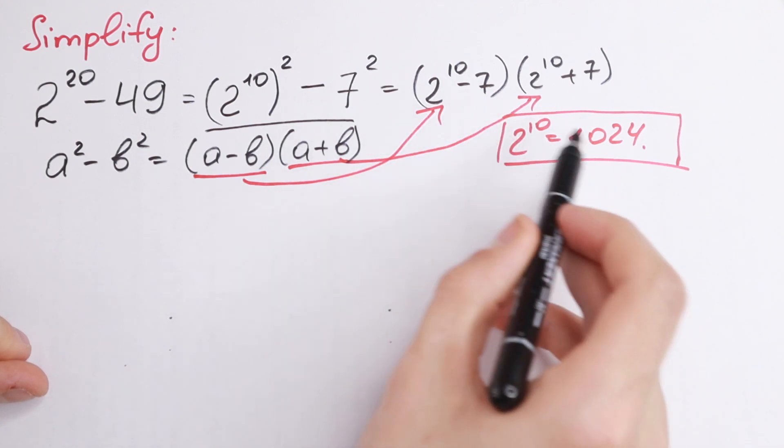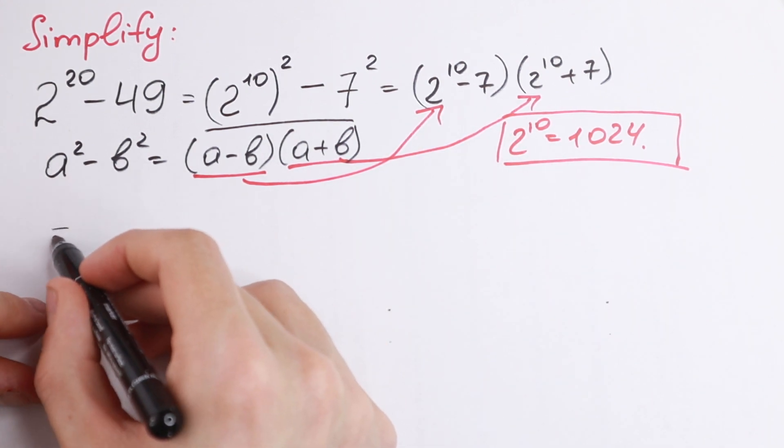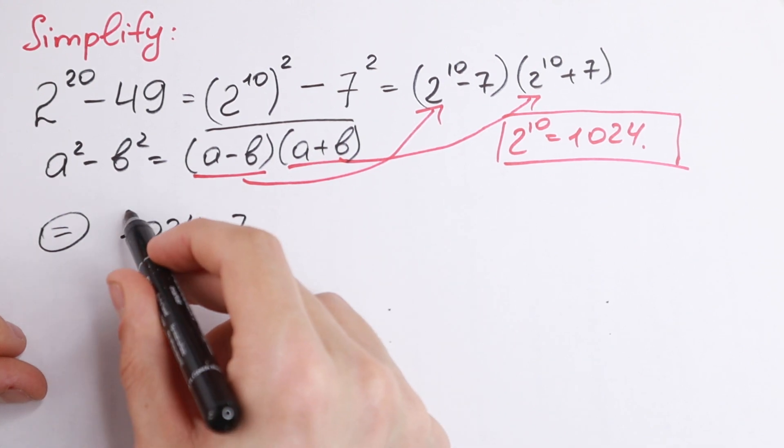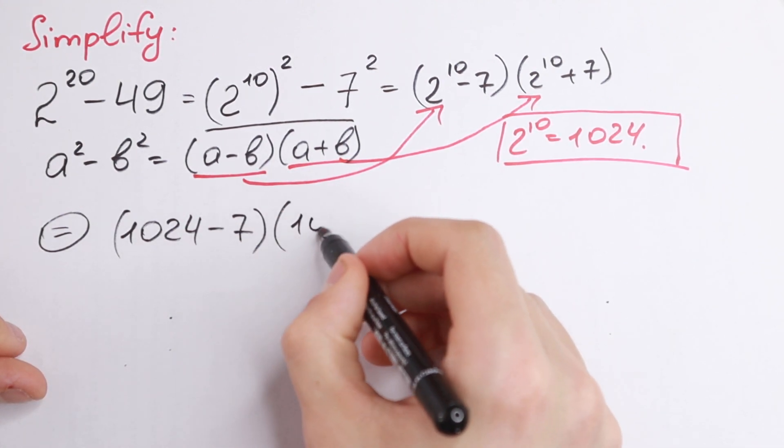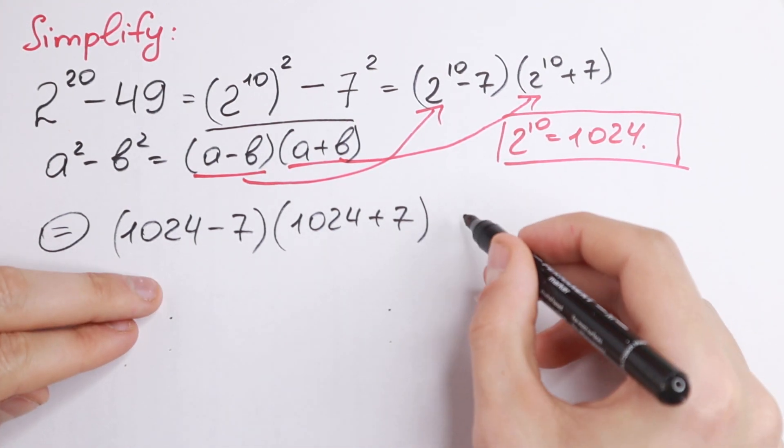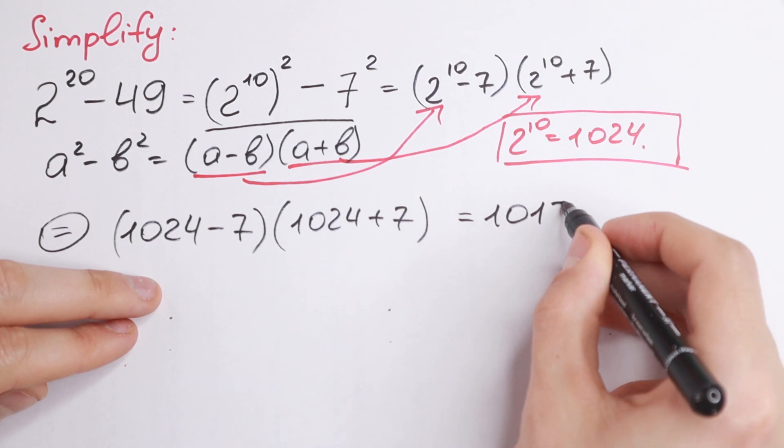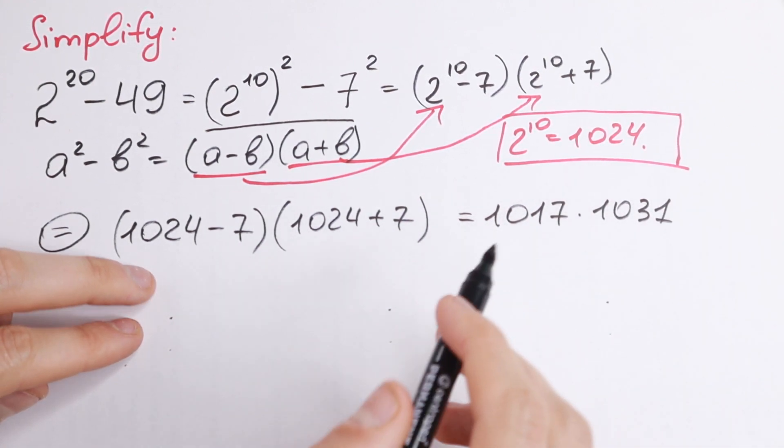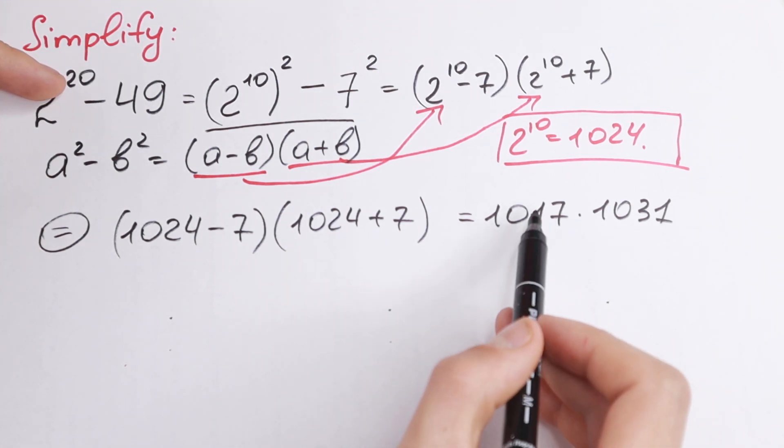This is not a huge number, so we can plug in this 1024. We will have 1024 minus 7 and we multiply this by 1024 plus 7. So right here we will have 1017 times 1031. So as you can see, this is equal to this one.